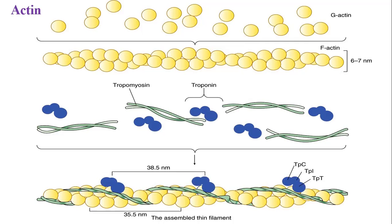If the actin filament is placed in low ionic concentration, the actin chain dissociates into G-actin molecules — globular actin monomers. As ionic strength of the solution increases, these G-actin molecules unite end to end and form long F-actin — fibrous actin, which is a polymer. G-actin is the monomer form found when cytoplasmic ionic concentration is low, while F-actin is the polymer form found at higher ionic concentrations.